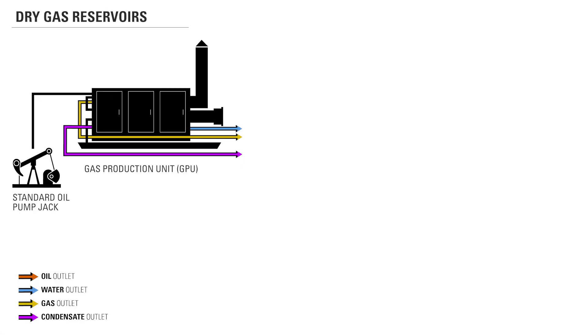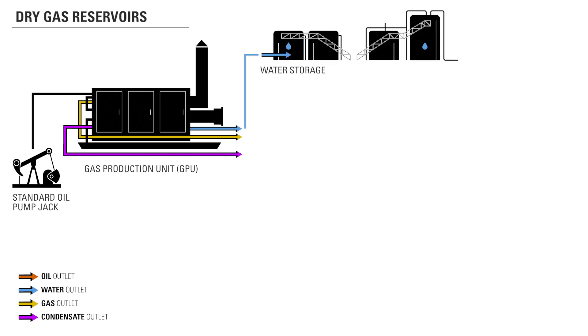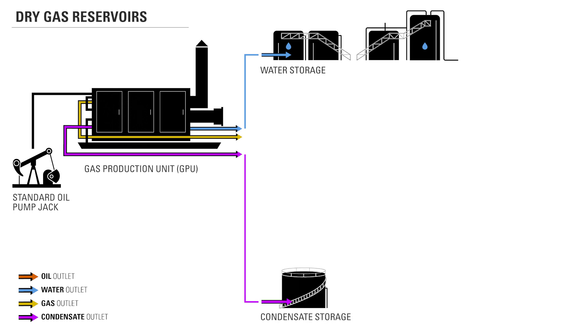Dry gas reservoirs produce mostly natural gas with some water vapor. This type of reservoir will first go through a gas production unit, or GPU. This vessel incorporates a line heater and a separator into one unit and separates the gas from the liquid. When leaving the GPU, the separated water will go to storage for later transportation and disposal. The condensate, which is the very light, valuable liquid hydrocarbon, will go to storage and be sold to a midstream company.